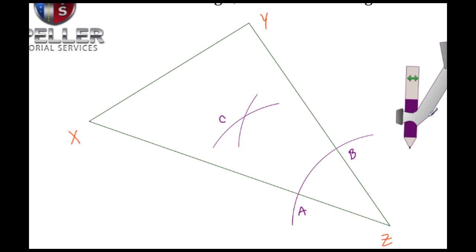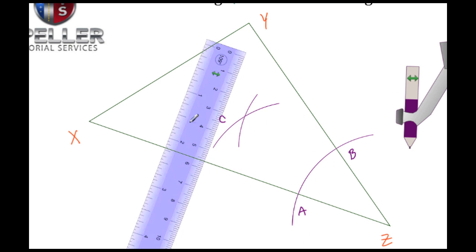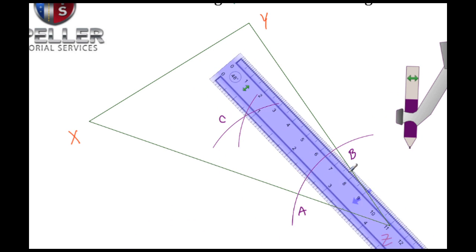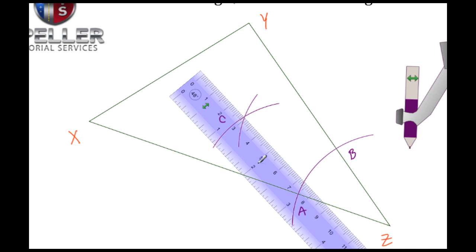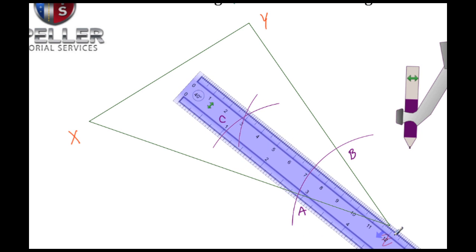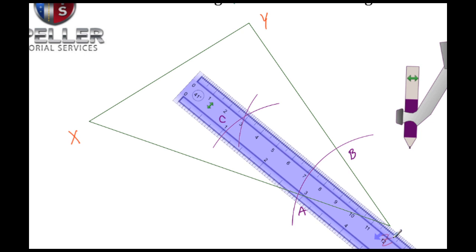Once I draw the straight line from intersection C all the way down here to vertex Z, that there is my angle bisector for the triangle.